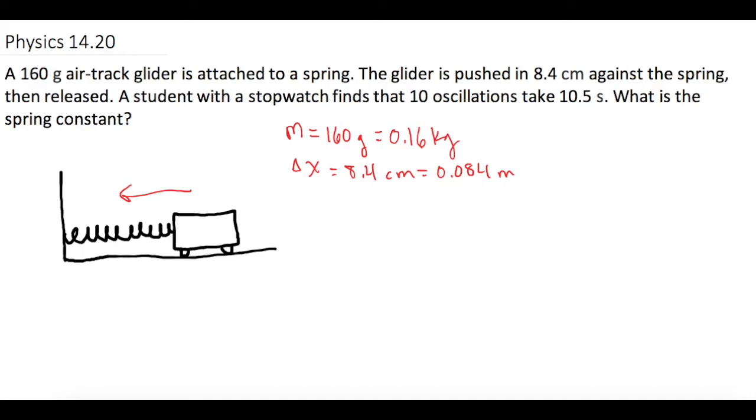So we can find either T or f. Remember T is equal to the amount of time or the change in time over the number of oscillations, and frequency is the number of oscillations in a given set time.